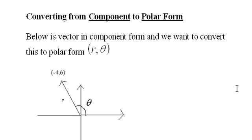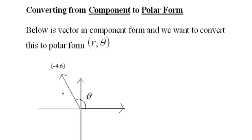Converting from component form to polar form. Below is a vector in component form, and we want to convert this to polar form, r theta. That is, here it is. We know the head of the vector is at negative 4 and 6, and we want to find out what theta is and what r is.